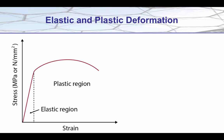So if we look at the stress versus strain plot, we know that there are two major regions. We have the elastic region where all deformation is recoverable, and then we have the plastic deformation which is non-recoverable.